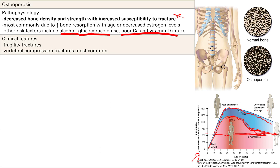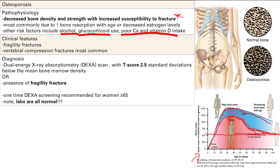The clinical features are straightforward: poor bone structure leads to fractures — fragility fractures with minimal or no trauma. The most common are vertebral compression fractures of the spine. To diagnose osteoporosis, you typically do a DEXA scan. The DEXA scan shows your bone density compared to a young adult woman. If your bone density is 2.5 standard deviations or more below the mean bone density of a young adult woman, you are defined as having osteoporosis.